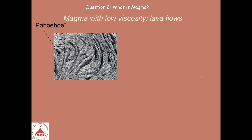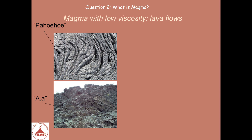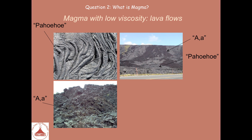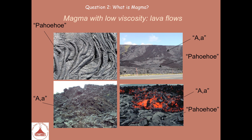Here are photos, all coming from Hawaii. This is Pahoehoe morphology. This is A-A morphology. You can see the difference — both on the same slope and both active ones.